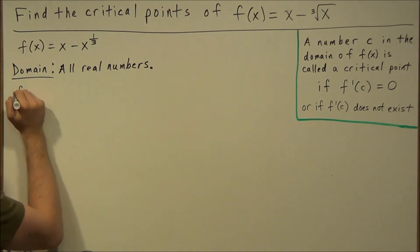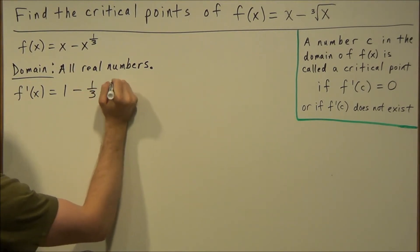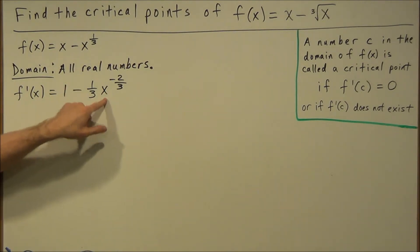We get this started. We take the first derivative. The derivative of x is 1 and then we're going to use power rule. It's one-third times x to the negative two-thirds. We're just bringing down this exponent, multiplying by x and then subtracting one to get negative two-thirds.